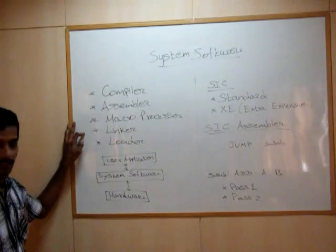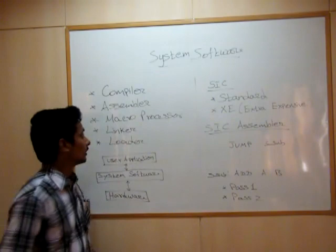These are the main types of System Software: Compiler, Assembler, Macro-Processor, Linker, and Loader.